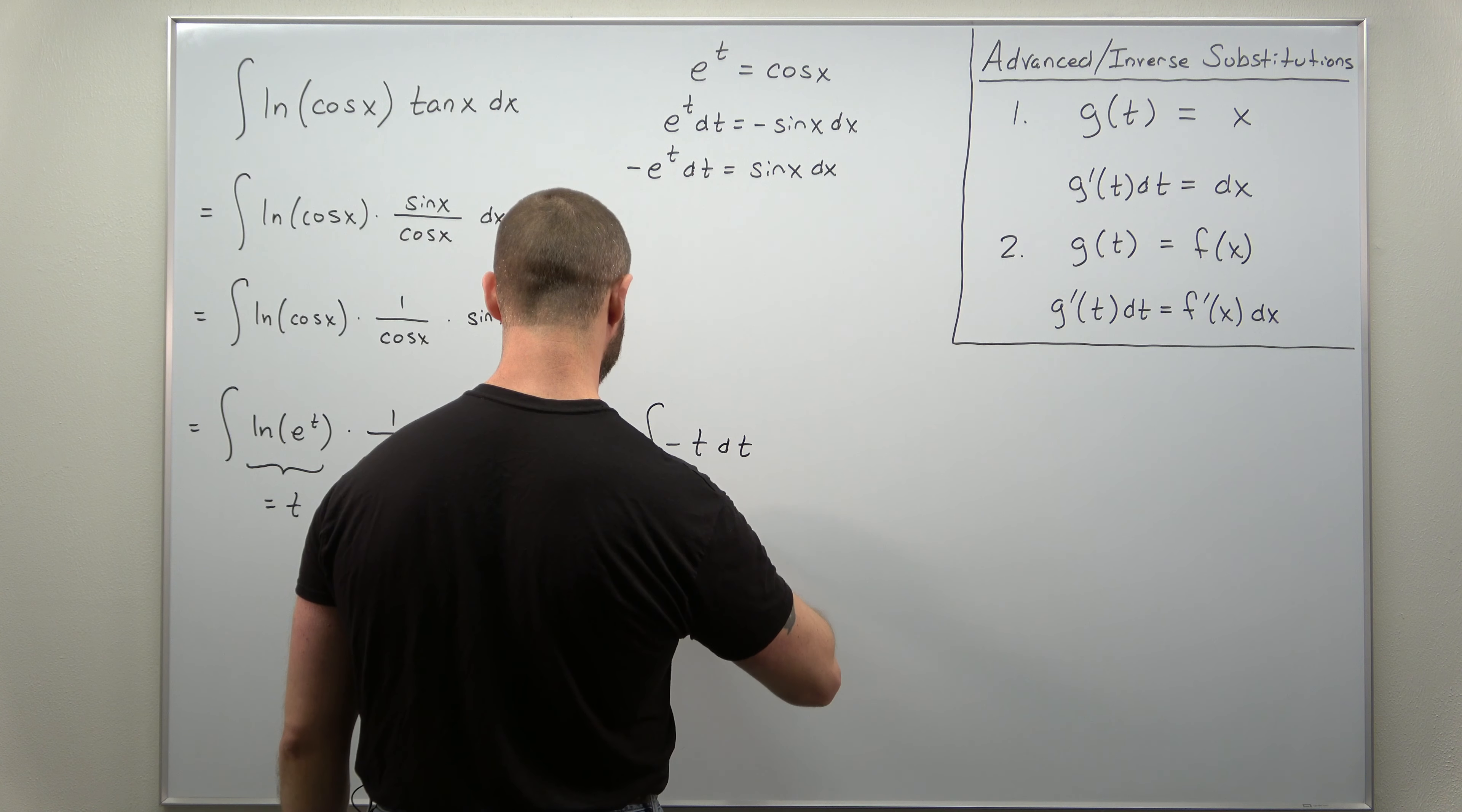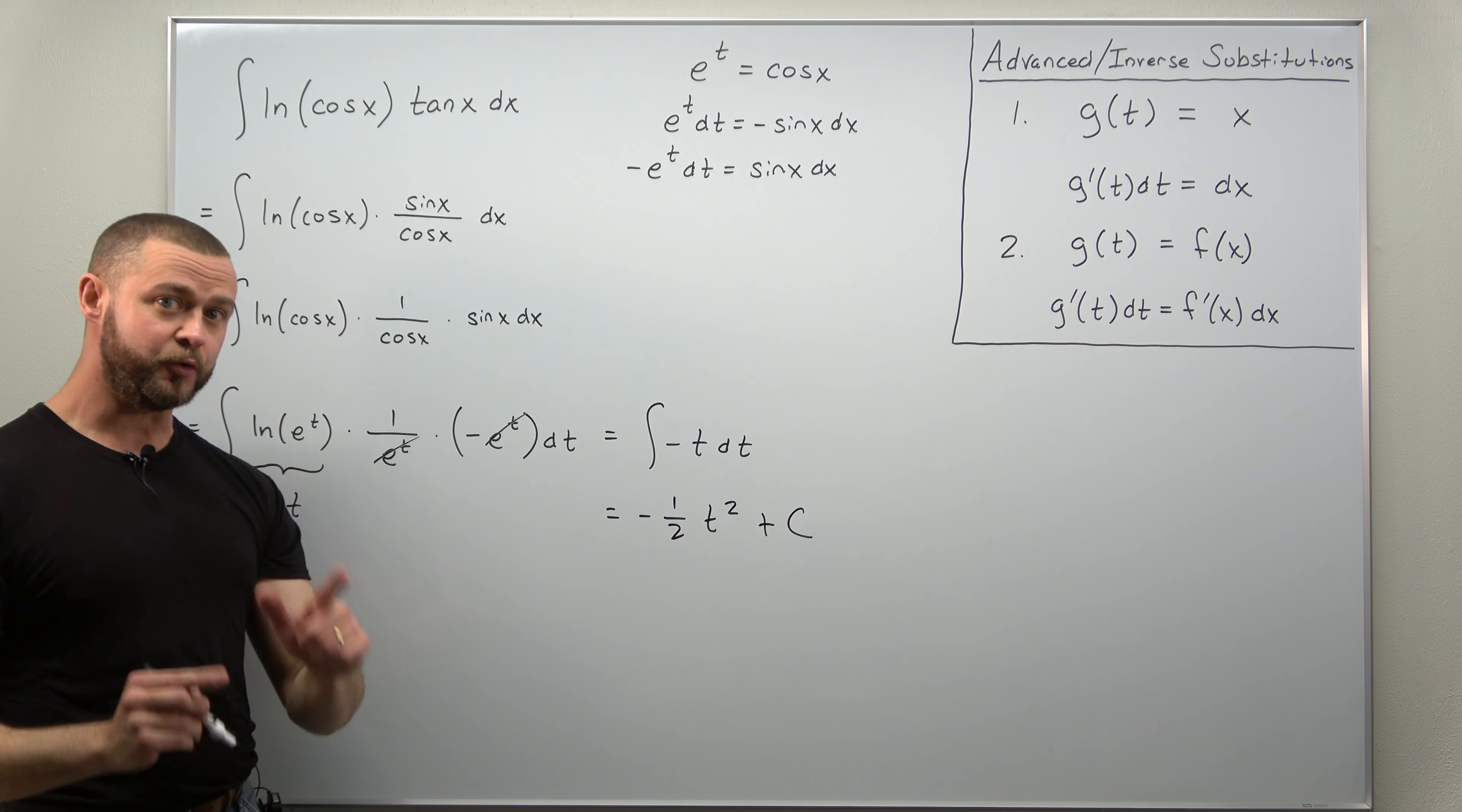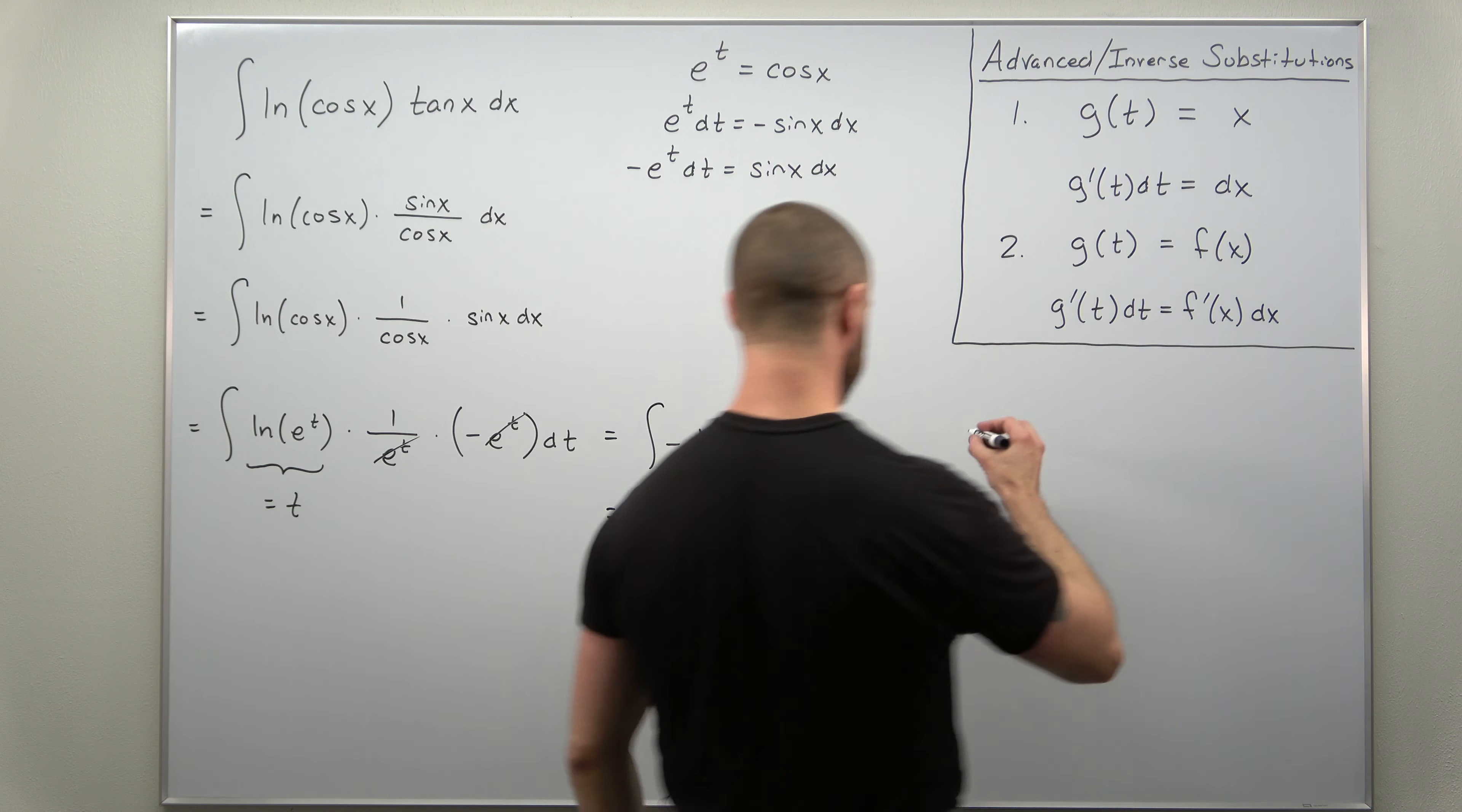You should get negative one half t squared plus an integration constant, and now we just need to back substitute t in terms of the original variable x. So let's go to our original advanced substitution.